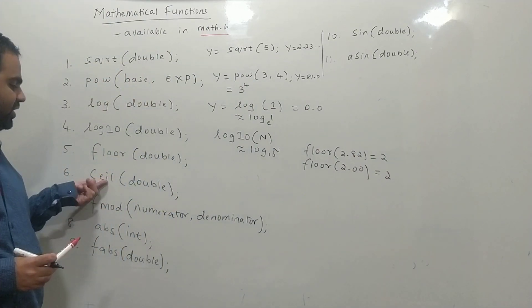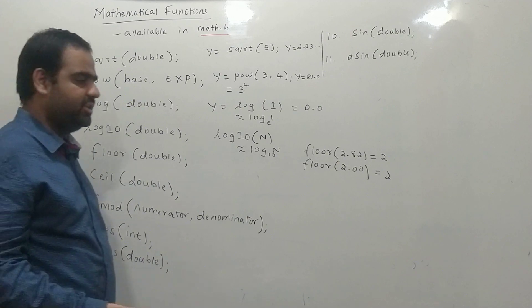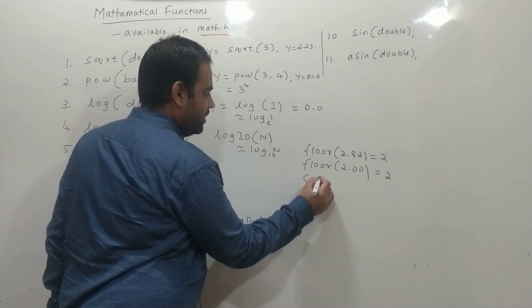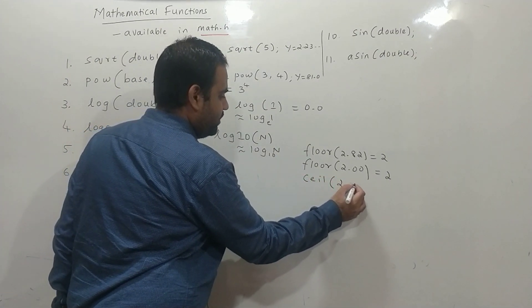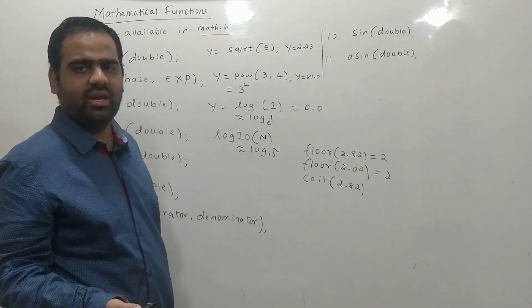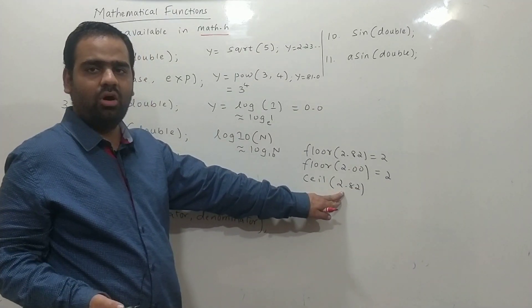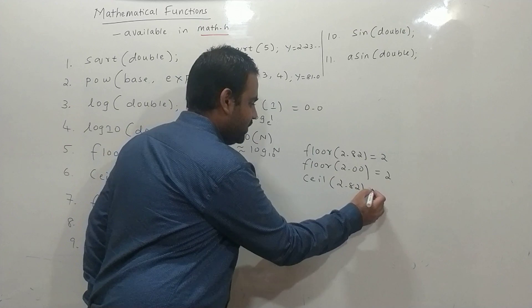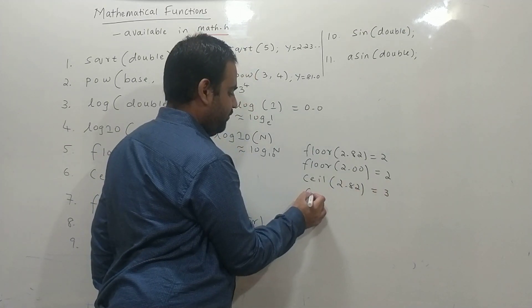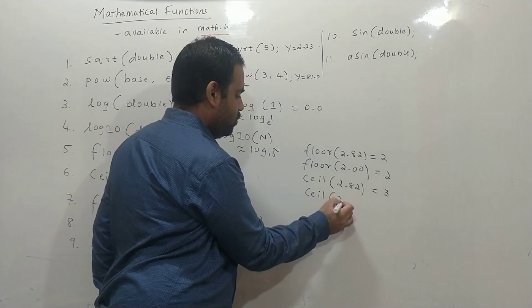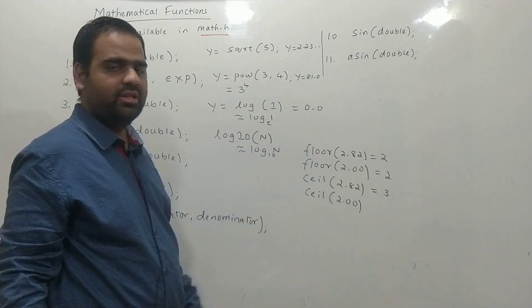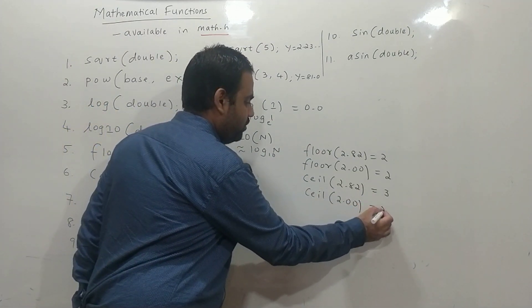The next function is ceil. Ceil is the next greater integer. If we write ceil of 2.82, you need to find the next integer which is greater than or equal to 2.82. That is 3. If we write ceil of 2.00, the next integer greater than or equal to 2 is 2.